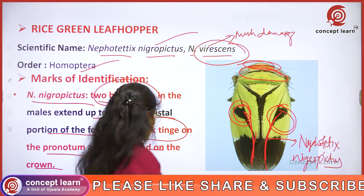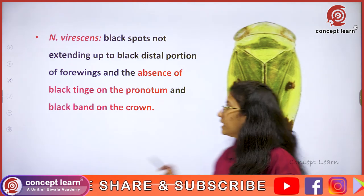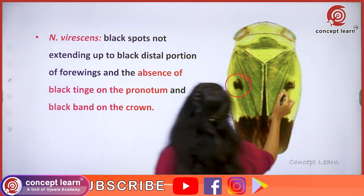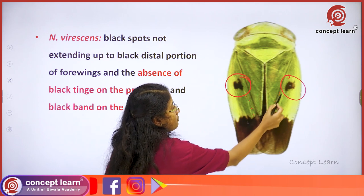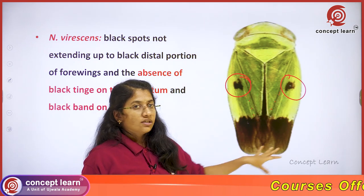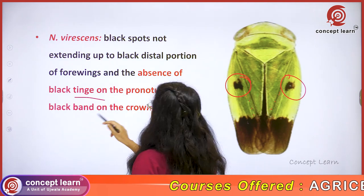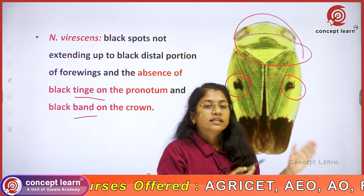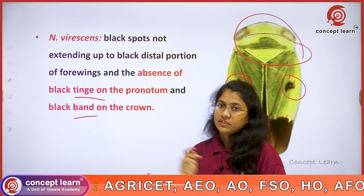In the case of Nephotettix virescens, black spots are present but there is no further extension of these spots connecting to the basal region of the forewings. The black tinge on the pronotum and the black band upon the crown are both absent in Nephotettix virescens.